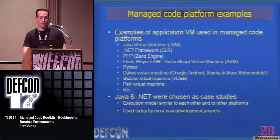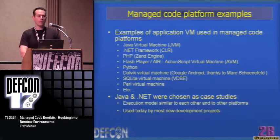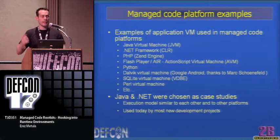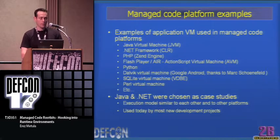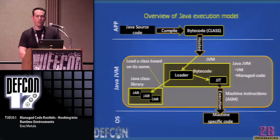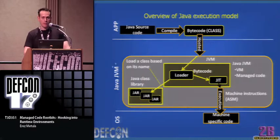The JVM loads the class libraries from JAR based on the name. Using a just-in-time compiler it generates machine-specific code, which is what the OS and CPU execute. The .NET model is pretty much the same, but now we have assemblies — .NET notation for compiled code, DLLs and EXEs. Libraries are loaded from the GAC, the Global Assembly Cache — think of it as system calls, where functions are implemented. The JIT generates machine-specific code.